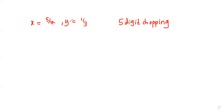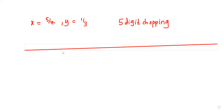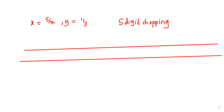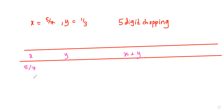What we are going to do is draw a table. We'll mark the values — first we are inputting x, then y, and we need to figure out what the value of x plus y is. Once we click 5 divided by 7 and press enter on our calculator...